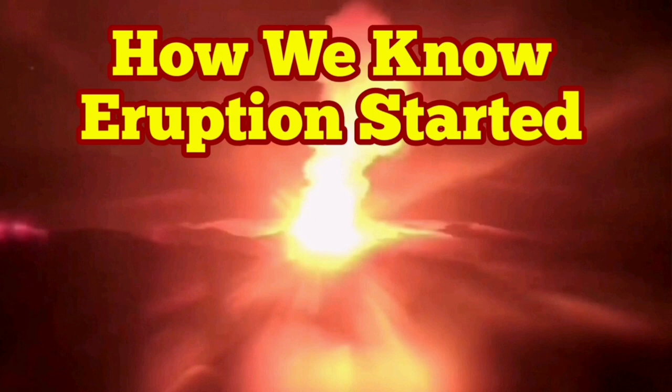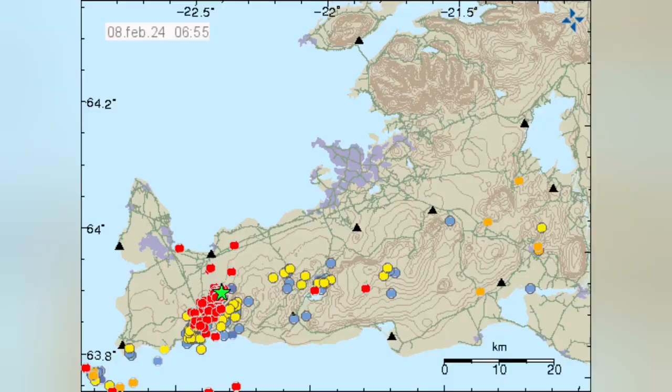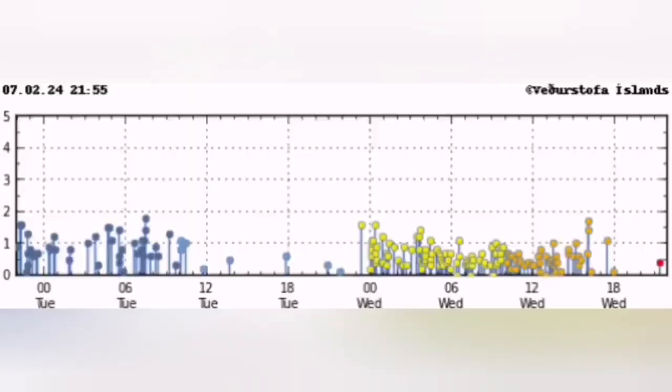How do we know the eruption has started? This is the Reykjanes Peninsula and this is the Schwarzsenghi volcanic system that we are talking about. You see a cluster of the earthquakes appearing concentrated in a certain area, in this case near the Schwarzsenghi volcanic system.